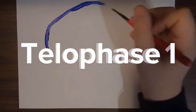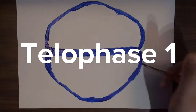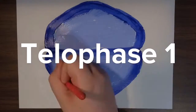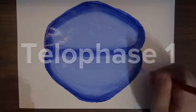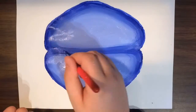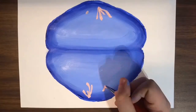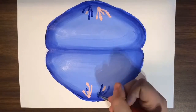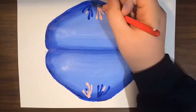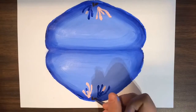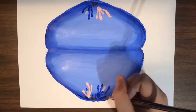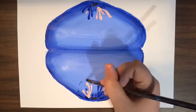During Telophase I, the spindle fibers disappear, cytokinesis takes place, and the nuclear membrane starts to reappear. There are now two haploid cells.